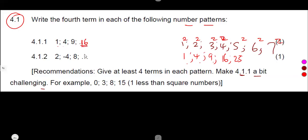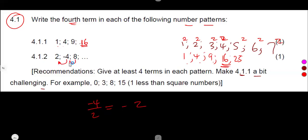The fourth term is 16. Now the next pattern — there is 2, minus 4, 8. If you check: positive, negative, positive. It's another type. What is happening here? Let's try to divide. Minus 4 divided by 2 is negative 2. Then 8 over minus 4 — that's also negative 2.